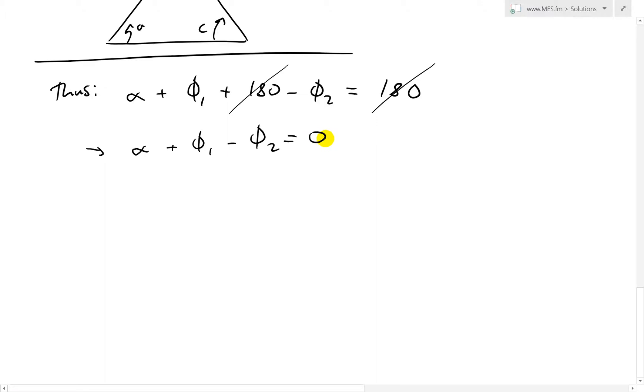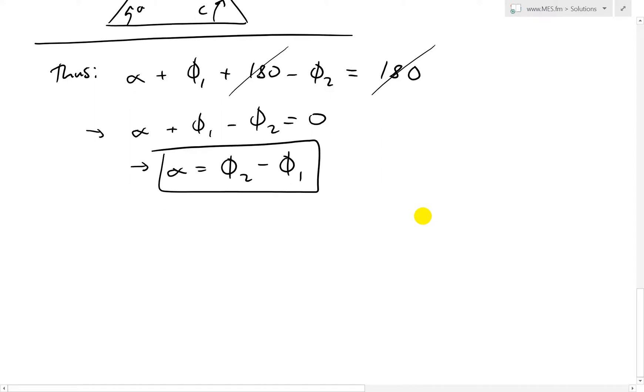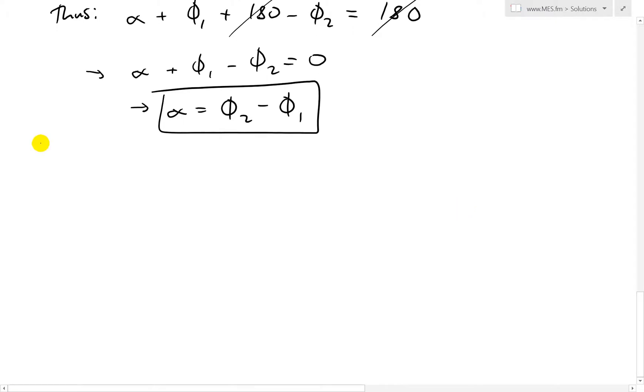Now, if we move these both on the other side, we get alpha equals phi 2 minus phi 1. And there is our answer. The alpha is in form of two angles, the angles of the two lines that it makes with the horizontal axis.